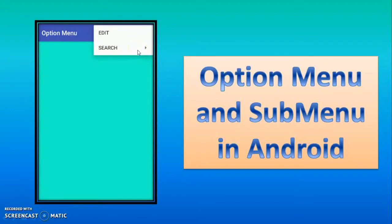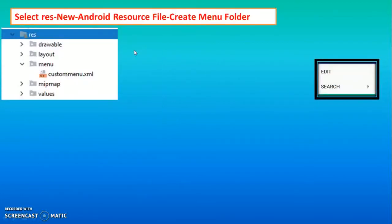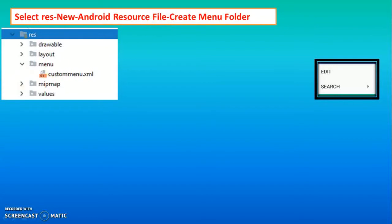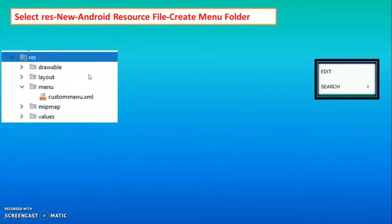For creating this, you have to select the resource option, then select New Android Resource File, and create a menu folder. Inside that menu folder, you can create the XML file. In this example, inside the menu folder we have custom_menu.xml.